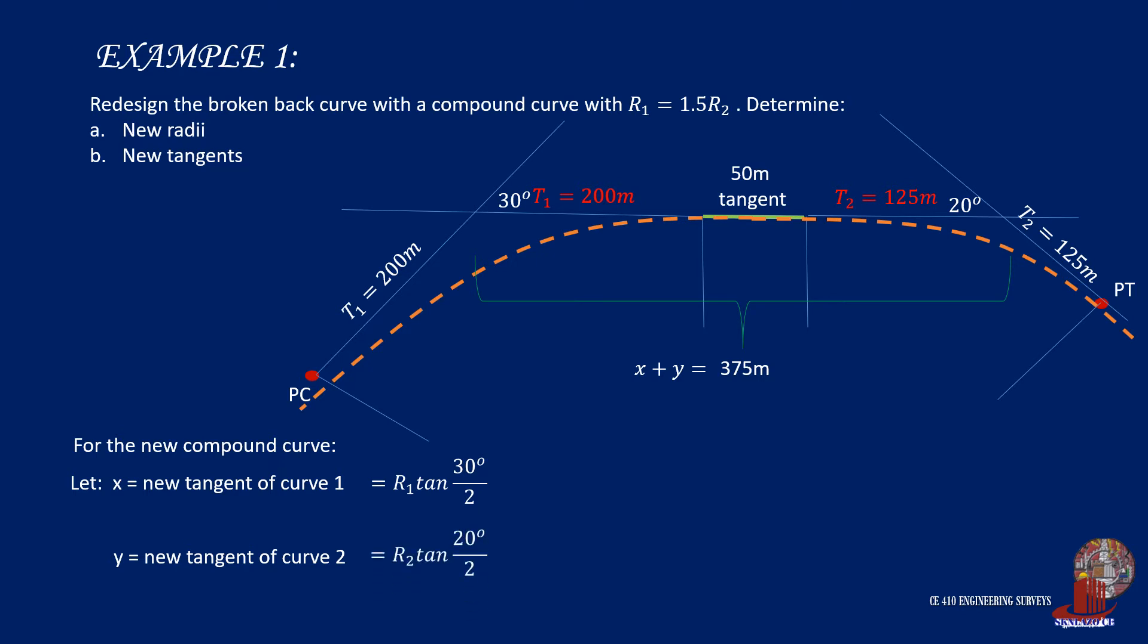Similarly, y would be radius 2 times the tangent of 10 degrees all over 2. So plugging these terms into the working equation, we get R1 times tangent of 15 degrees plus R2 times tangent of 10 degrees equals 375 meters.